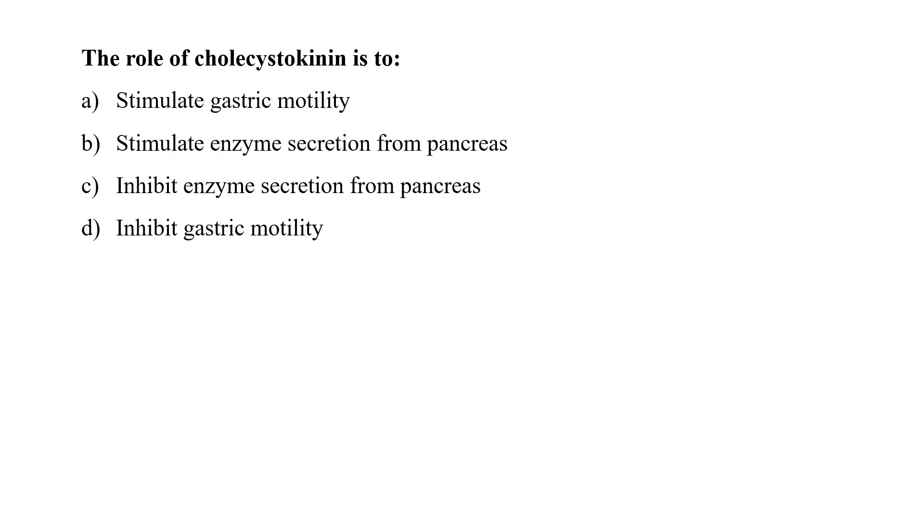The role of cholecystokinin is to stimulate gastric motility, stimulate enzyme secretion from pancreas, inhibit enzyme secretion from pancreas, or inhibit gastric motility. CCK or cholecystokinin stimulates pancreatic acinar cells to release a juice rich in pancreatic digestive enzymes, which catalyze the fat, carbohydrate, and protein digestions. So option B is the correct answer.